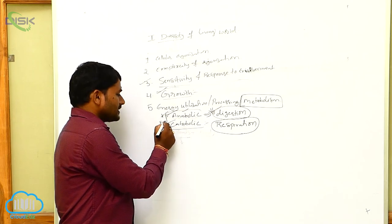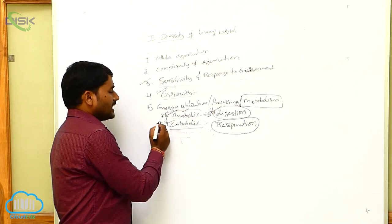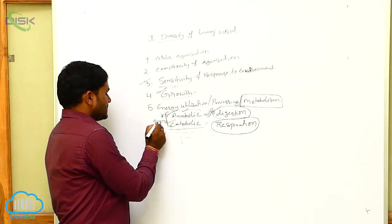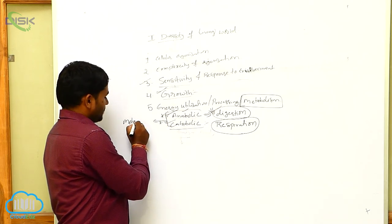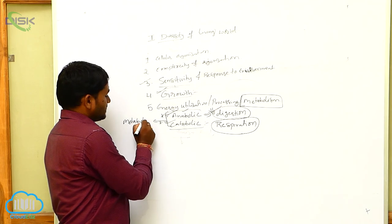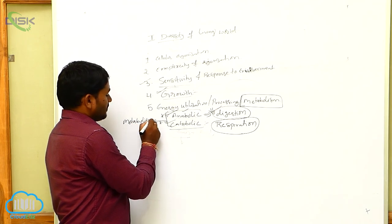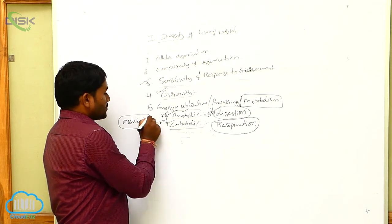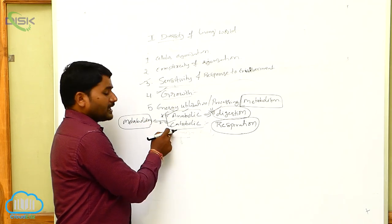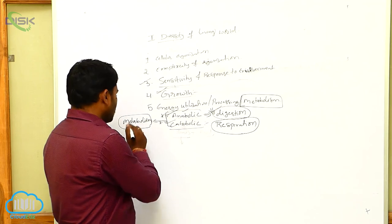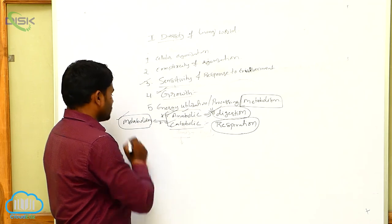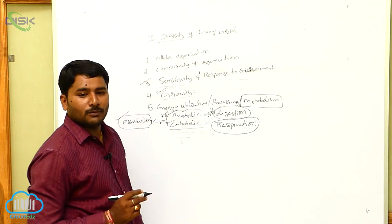Anabolism and catabolism collectively are called metabolism. Anabolism and catabolism collectively constitute metabolism.